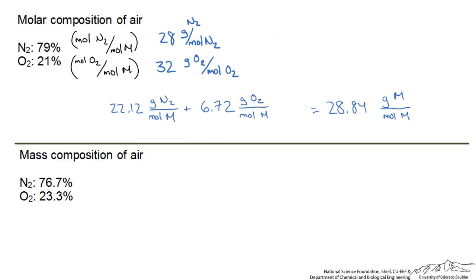We write it as: the average molecular weight is equal to the summation of the molar fractions times their respective molecular weights. Now when we look at a mass composition we cannot use the same formula, so we have to come up with another one.